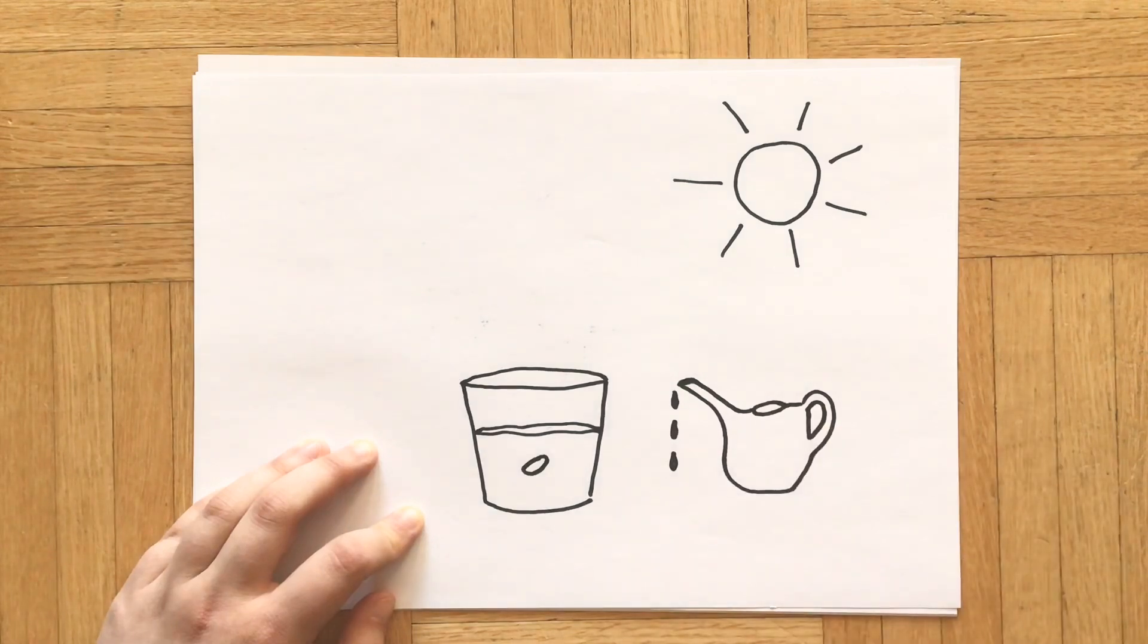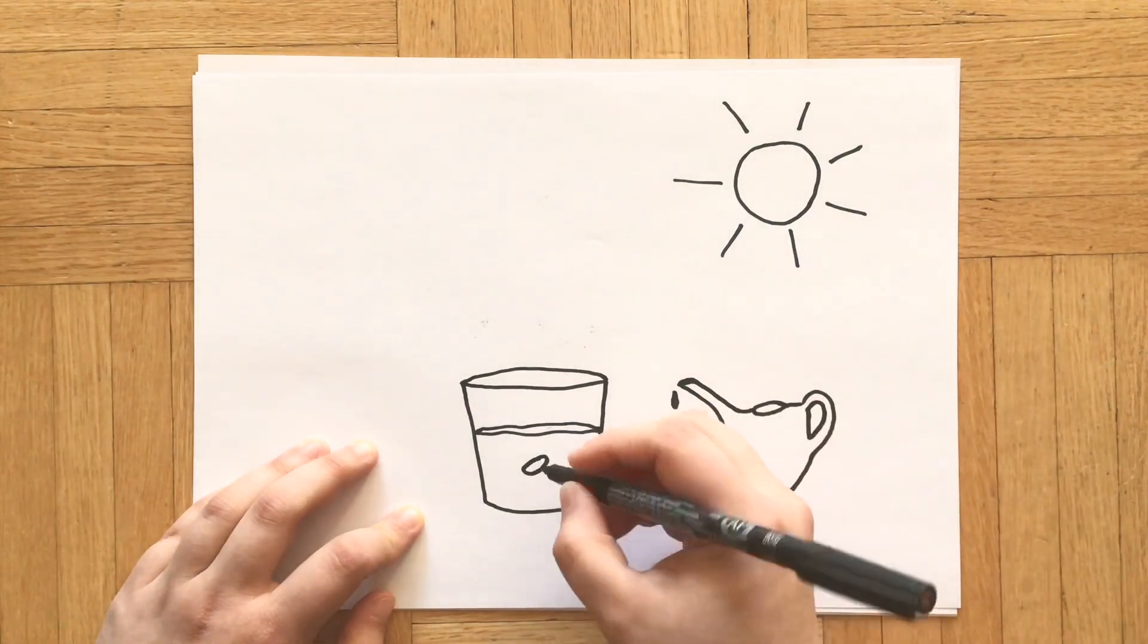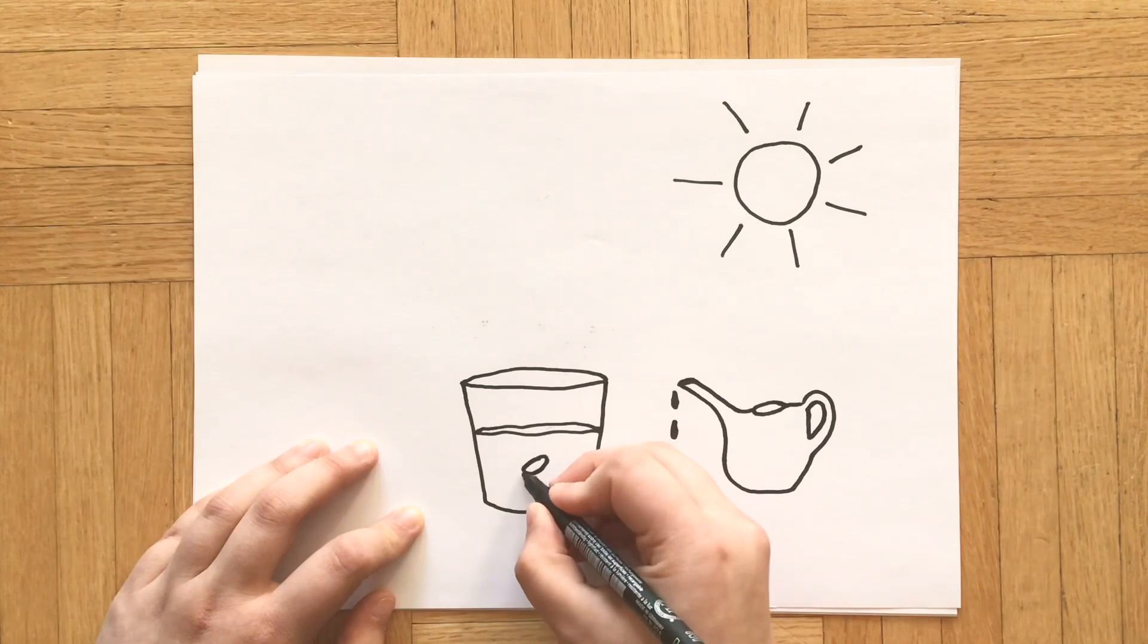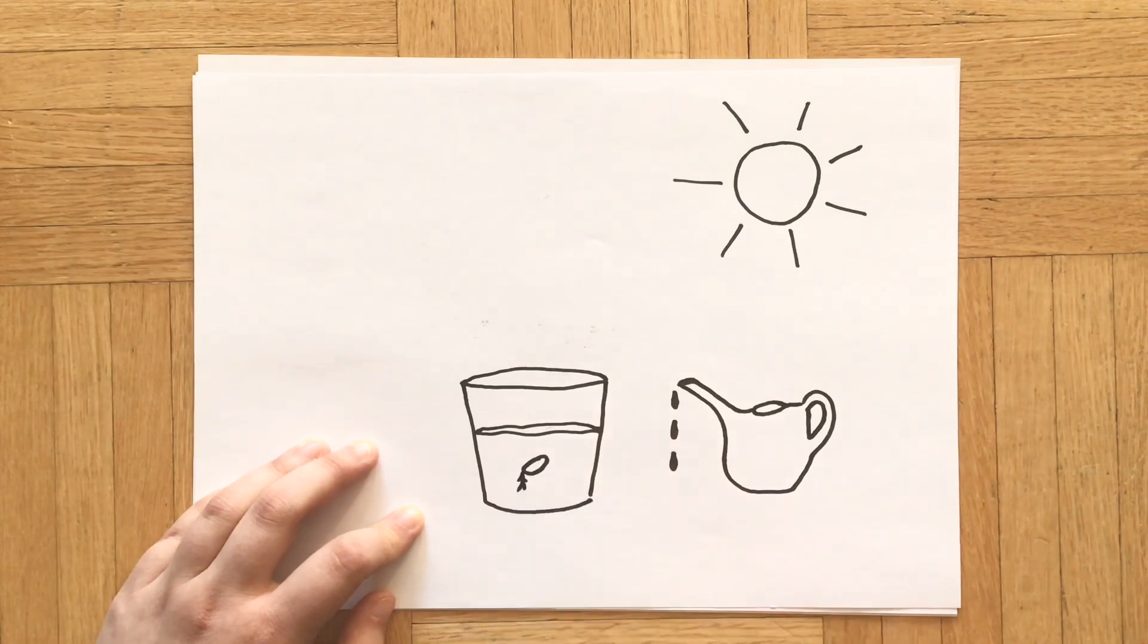That way they can grow healthy and strong. When the seed starts to grow, it first sprouts a little root.